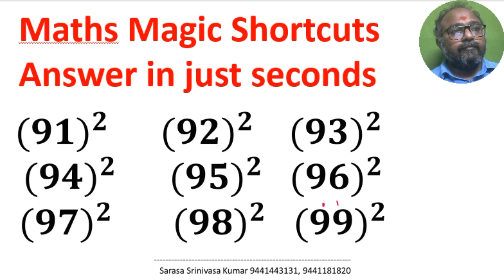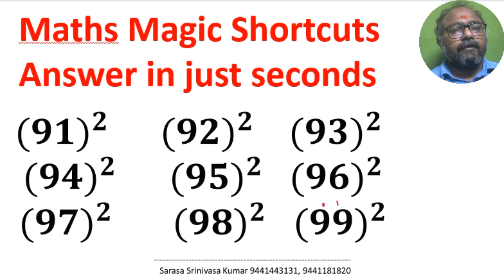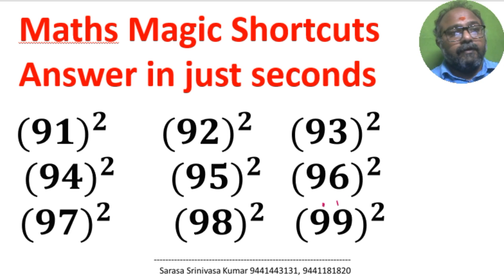Magic shortcuts: 91 square, 92 square, 93 square, 94 square, 95 square, 96 square, 97 square, 98 square, 99 square.